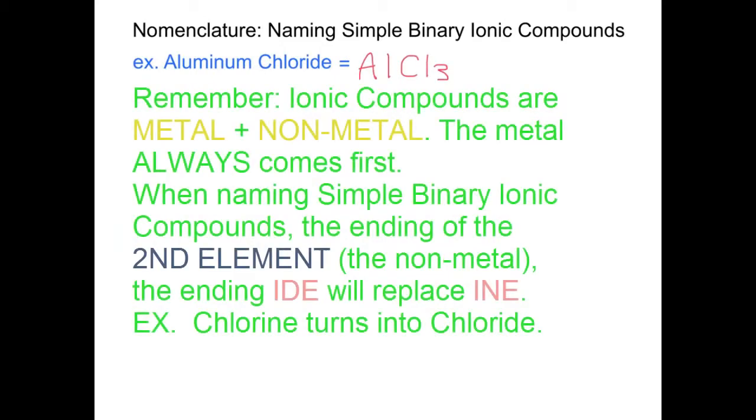Naming simple binary ionic compounds. For example, aluminum chloride is equal to AlCl3. Remember, ionic compounds are metal plus nonmetal. When naming simple binary compounds, the metal always comes first. As well, the ending of the second element, which is the nonmetal, will end in the suffix -ide.